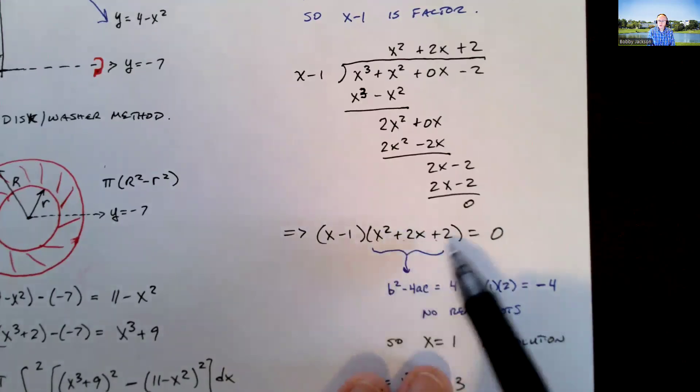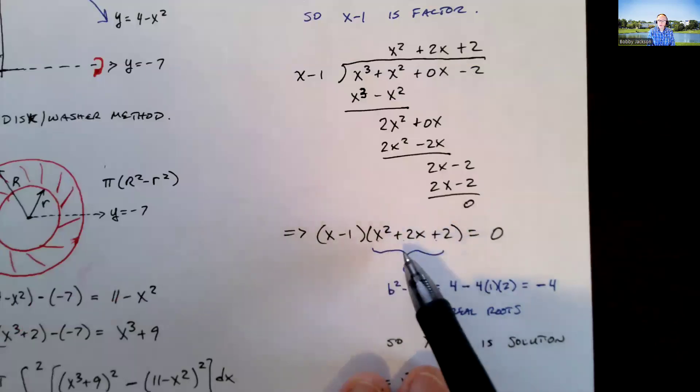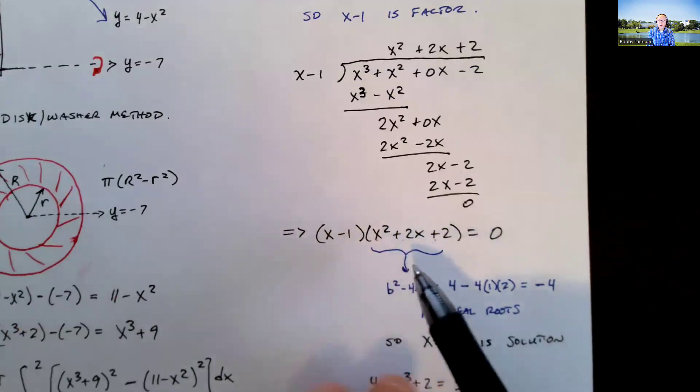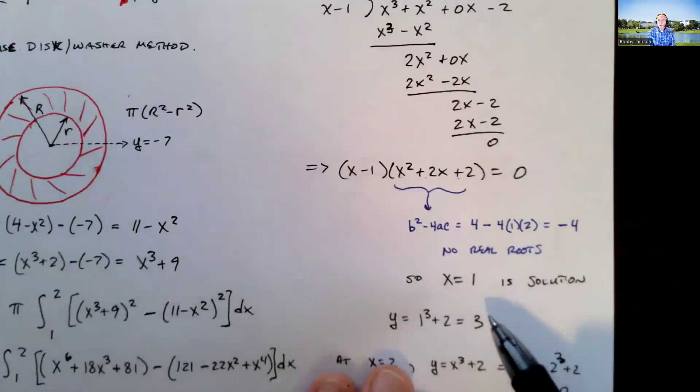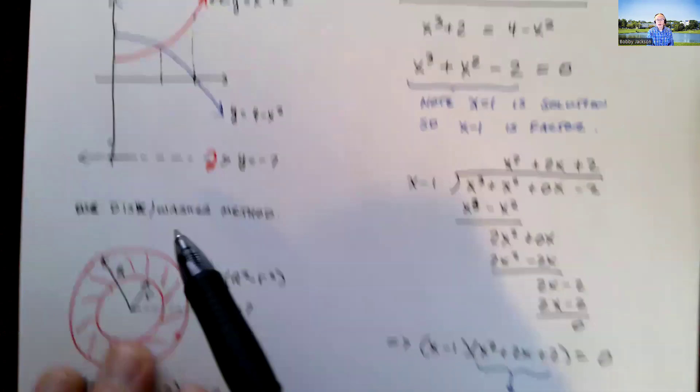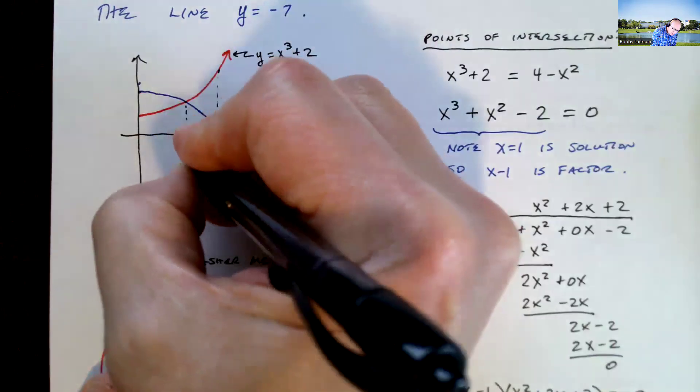The roots of this quadratic degree 2 polynomial are imaginary or complex, non-real complex. Bottom line is x equal 1 is the only real solution.